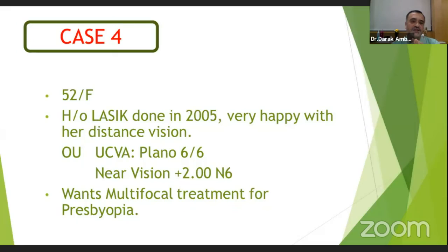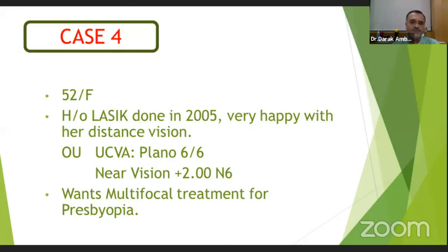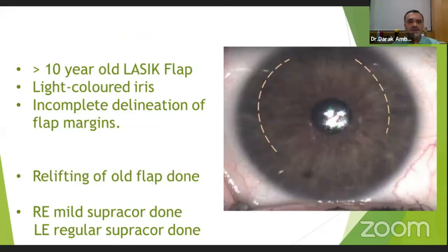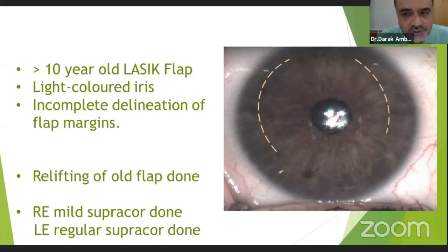This is a redo LASIK case — LASIK was done in 2005, patient was very happy with almost 6-6 for 8 years, then came back with a presbyopic correction need of plus 2 and requested multifocal treatment for plano. We treated this patient; because of a light-colored iris, we couldn't lift that flap initially. Relifting of the flap was done and regular SupraCore in the non-dominant eye was performed in this case.